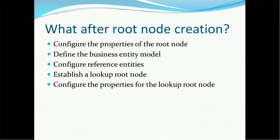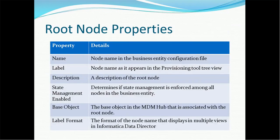There is one root node based on the main business entity, and there will also be some lookup root nodes. For example, country is a kind of reference or lookup data — we have to create a lookup node for it. State code is also reference data requiring a lookup node. Then we have to configure the properties for the lookup node. So there are two types of root nodes: business entity root node and lookup root node, with some others as well.